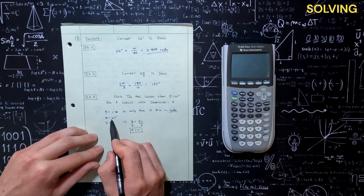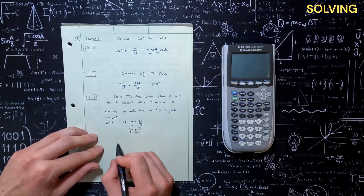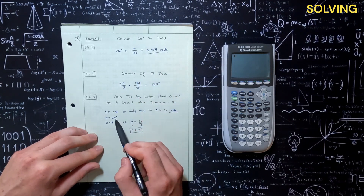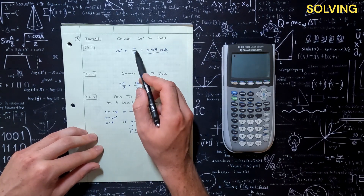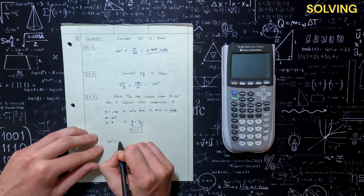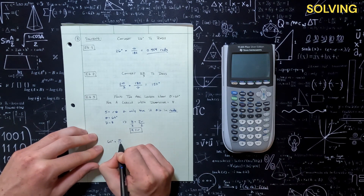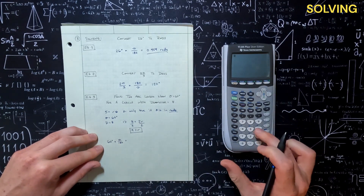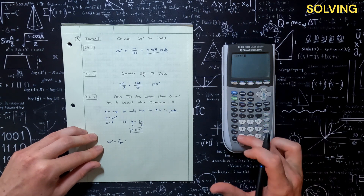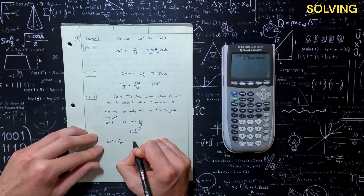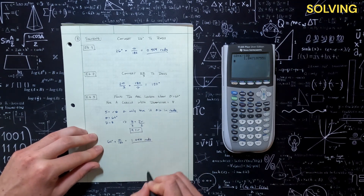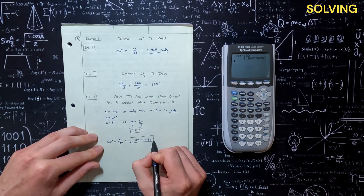So let's do that: we're going from degrees to radians, so we're going to multiply 60 degrees by pi over 180. We do 60 times pi divided by 180, and we get 1.047 radians. Let's box that in to keep it consistent. Now we can finally solve for our arc length.